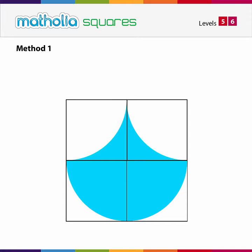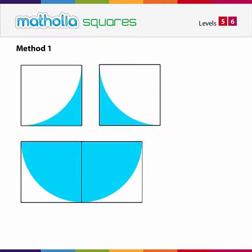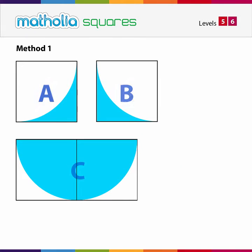Method 1. We can divide the grid into three parts: A, B, and C. To find the total area of the blue figure, we need to find the area of the blue figure in each part and add them together. We can see by symmetry that the area of the blue figure in A is the same as B. So let's find the area of A and double it to find the area of A and B.